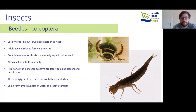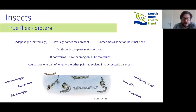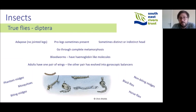True flies are a very large group with many forms, including phantom midges, mosquitoes, black flies, horse flies, and non-biting midges. Generally the larvae are legless, though some have prolegs; sometimes they have distinct heads, others less so. They all go through complete metamorphosis, with pupae sitting in the water column as they develop into adults. Chironomid midges sometimes have a haemoglobin-like molecule in their blood, which is why we call them bloodworms — this makes them more able to tolerate lower dissolved oxygen levels, so in heavily impacted environments you may find large numbers of true flies with the absence of other species. All adult true flies have one pair of wings, with the other pair evolved into a gyroscopic balancer, making them excellent fliers.